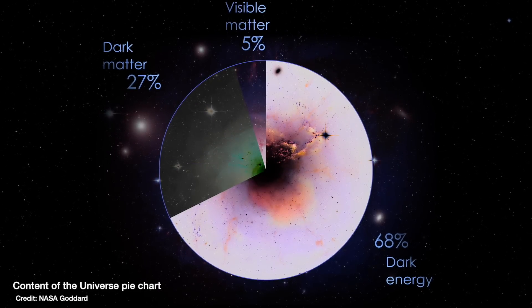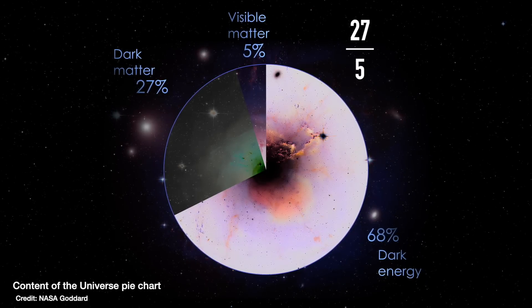Dark matter is matter that we can't see because it doesn't interact with light in the same way that normal matter does — it doesn't absorb, emit, or reflect light in any way. But we still know it's there because it has a gravitational effect on the things around it. We can see that dark matter outweighs normal matter by about a ratio of 5 to 1. But how do we know that? There are many different ways we've looked at the amount of dark matter, and thankfully they've all given us roughly the same answer.